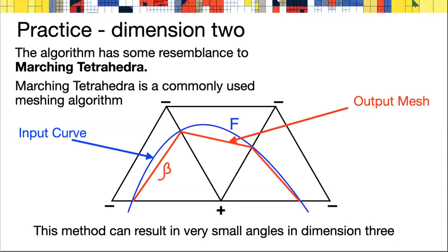Marching tetrahedra in dimension 2: we look at a tiling of the plane by triangles, and now we consider a curve, a blue curve F, rather than a surface. The mesh beta is constructed by taking the points where the curve intersects triangular edges and replacing the curve with straight line segments connecting those points.